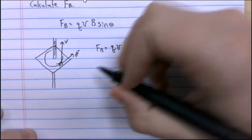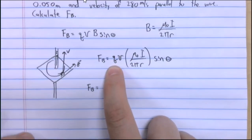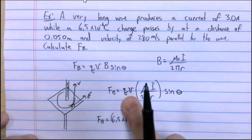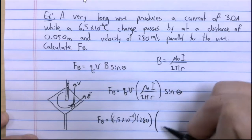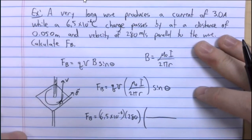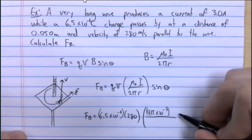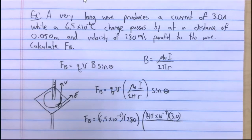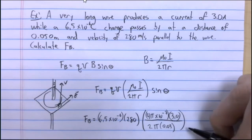Plugging in the numbers: Q is 6.5 times 10 to the negative 6 coulombs; V is 280 meters per second; mu naught is 4 pi times 10 to the negative 7; I is 3.0 amps; the denominator has 2 times pi times r equals 0.050 meters; and sine of 90 degrees equals 1.